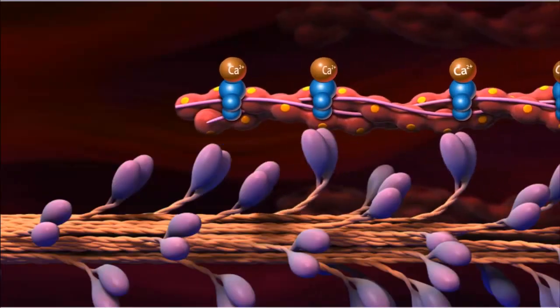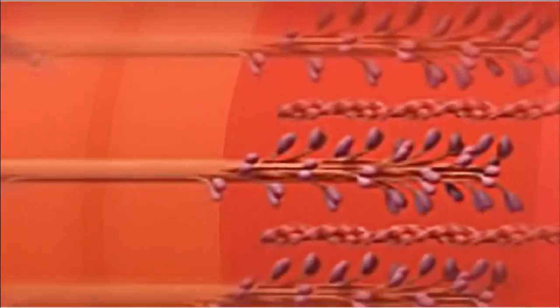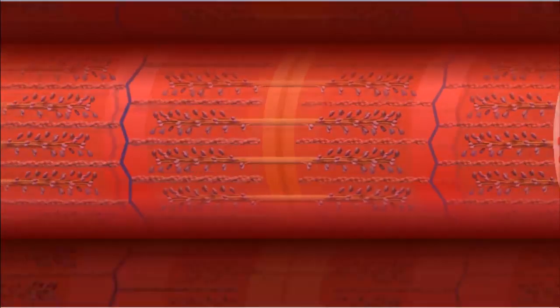As the actin and myosin slide along each other, the entire sarcomere shortens as the Z-lines draw closer to the M-line.